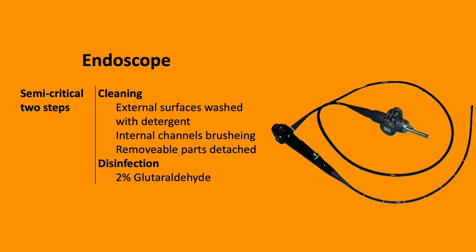Reusable endoscopes are classified as semi-critical under the Spaulding classification. They can harbour Pseudomonas, Klebsiella and Mycobacteria, and therefore should undergo cleaning and disinfection. Cleaning involves external surface washing with detergent, internal channel brushing, and removal and cleaning of all parts, followed by disinfection.